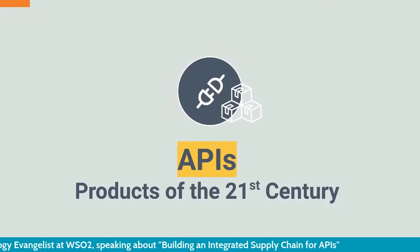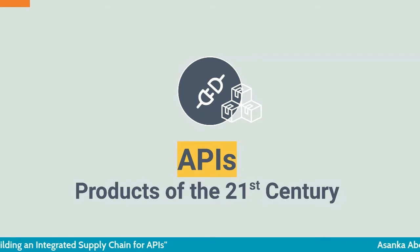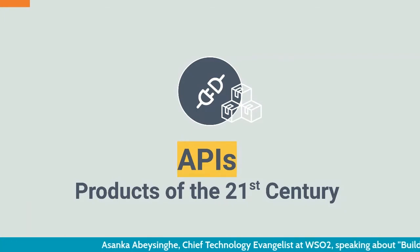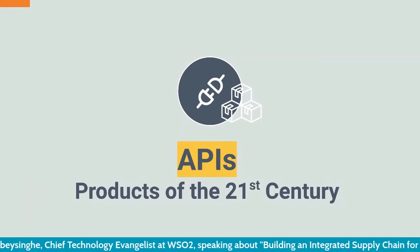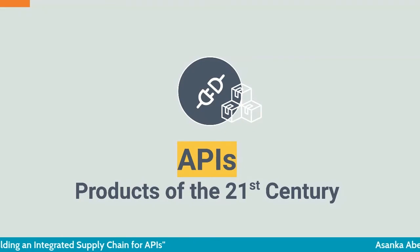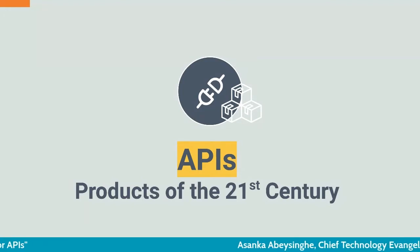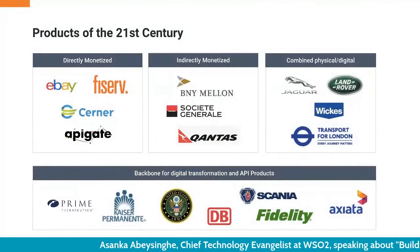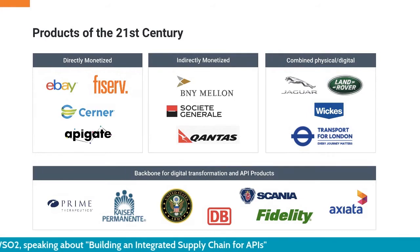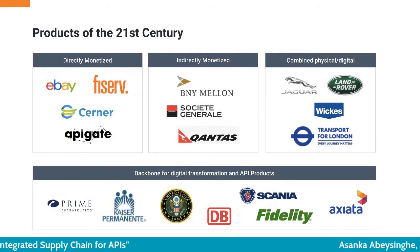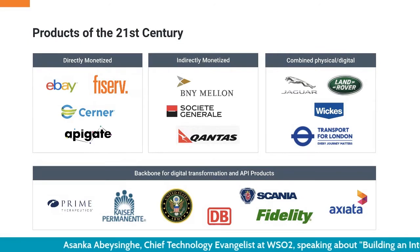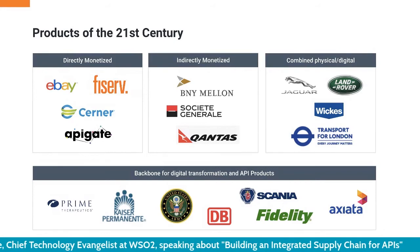We looked at how software is important to an organization, the expectations end users have from every organization, and the architecture inside organizations used to build these applications. Because of that, I claim APIs are the products of the 21st century — all the capabilities you provide for your end users are built on top of the APIs you expose from your business capabilities. There are different types of models: direct monetization, indirect monetization, combining physical and digital using APIs, and using APIs as the backbone for digital transformation.